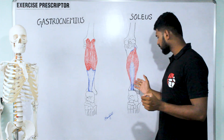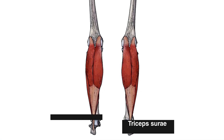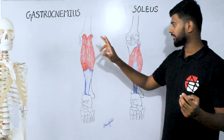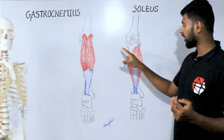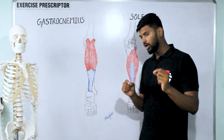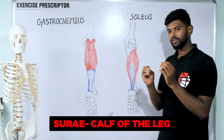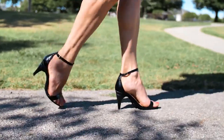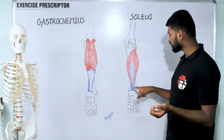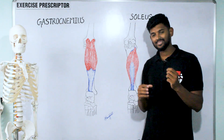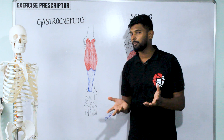Sometimes gastrocnemius and soleus together are called the triceps surae muscle. 'Triceps' means three heads — medial gastrocnemius, lateral gastrocnemius, and soleus. All three heads together are called triceps surae, meaning the calf of the leg. Excessive use of high-heel shoes and slippers leads to tightening of the triceps surae, which can potentially cause knee and hip pain.